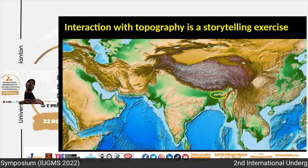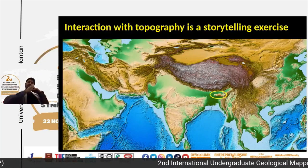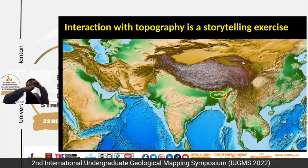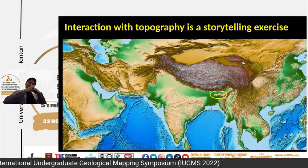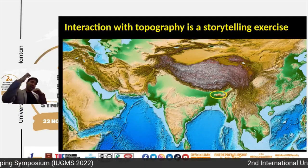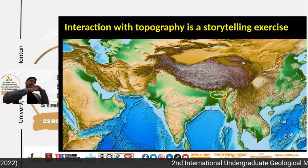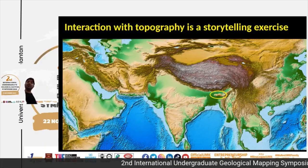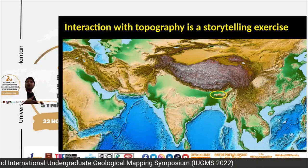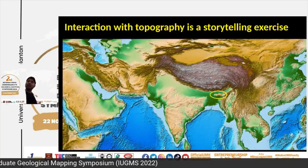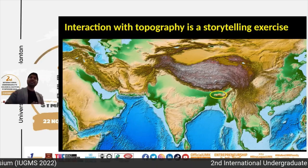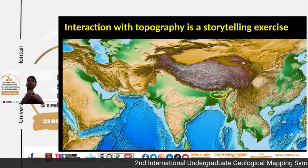Now you also know what type of faults to expect. The hanging wall is going up, so I would expect this area to have dominantly reverse faults where the hanging wall goes up. When you go to the field and ask 'is it a normal fault or a reverse fault?' — you know the dominance will be reverse faults. There will be variations, but this gives you an idea of how to read topography.